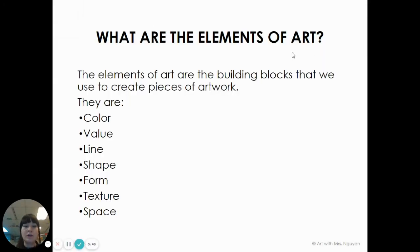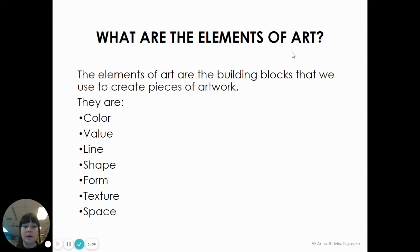Those elements include color — you see color in art. Value, which is dark and light. Lines, shapes, and forms, which are 3D shapes. And texture, which is how something feels with your fingers or looks like it could feel.